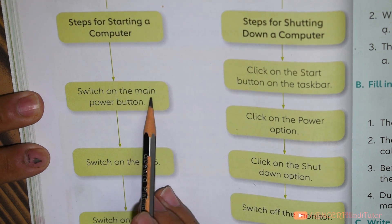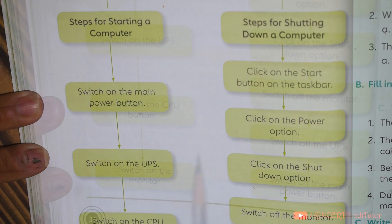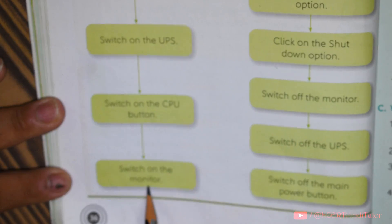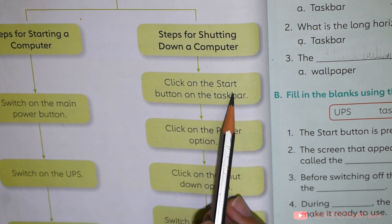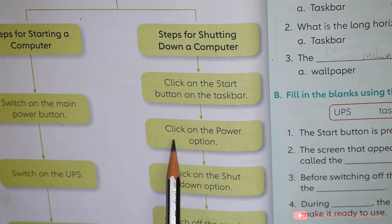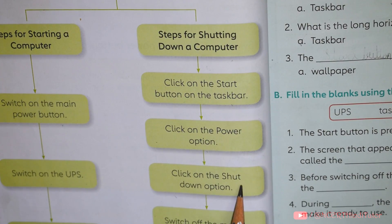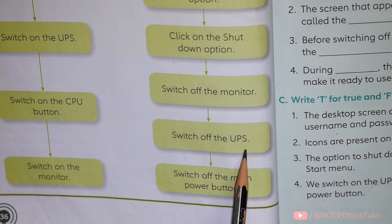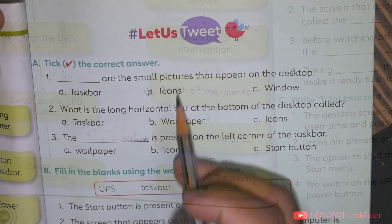Starting and Shutting Down a Computer. Steps for starting: switch on the main power button, switch on the UPS, switch on the CPU button, switch on the monitor. Steps for shutting down: click on the start button on the taskbar, click on the power button, click on the shutdown option, switch off the monitor, switch off the UPS, switch off the main power button.